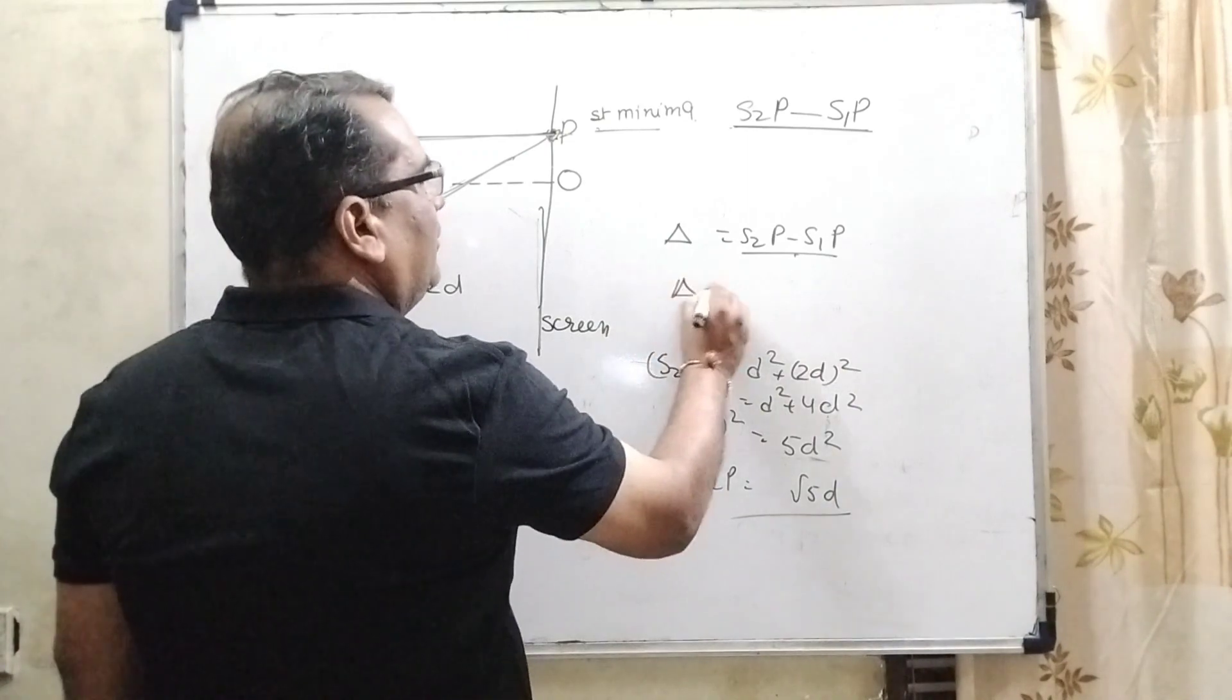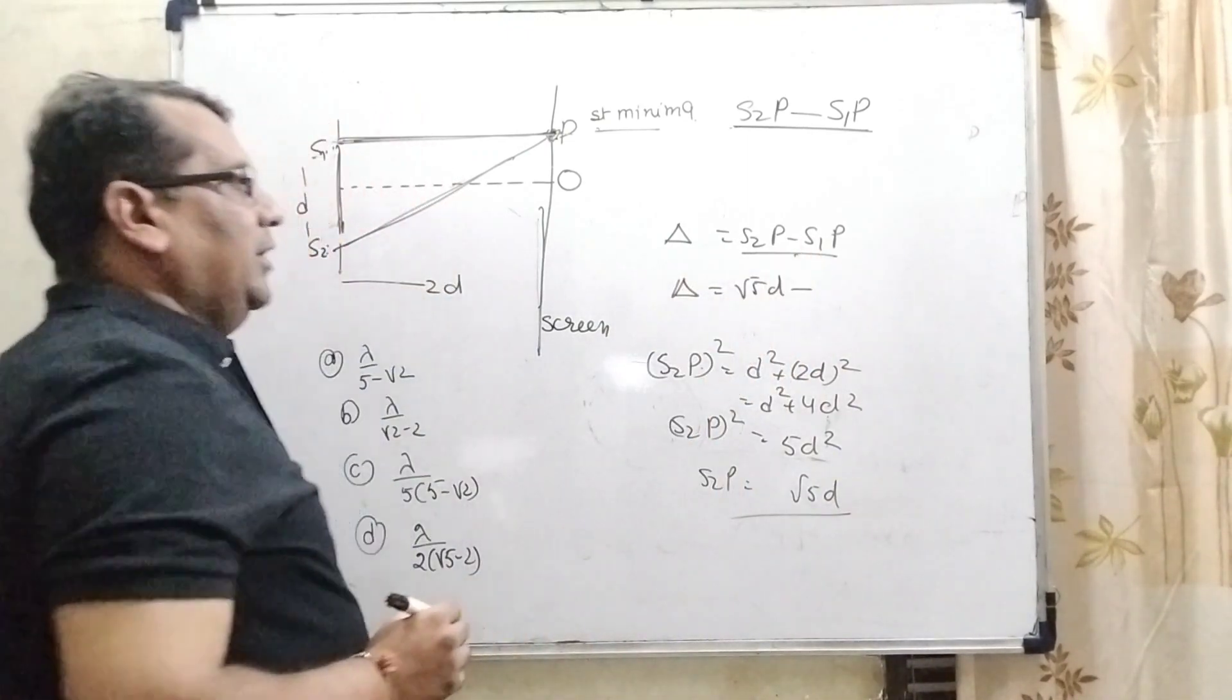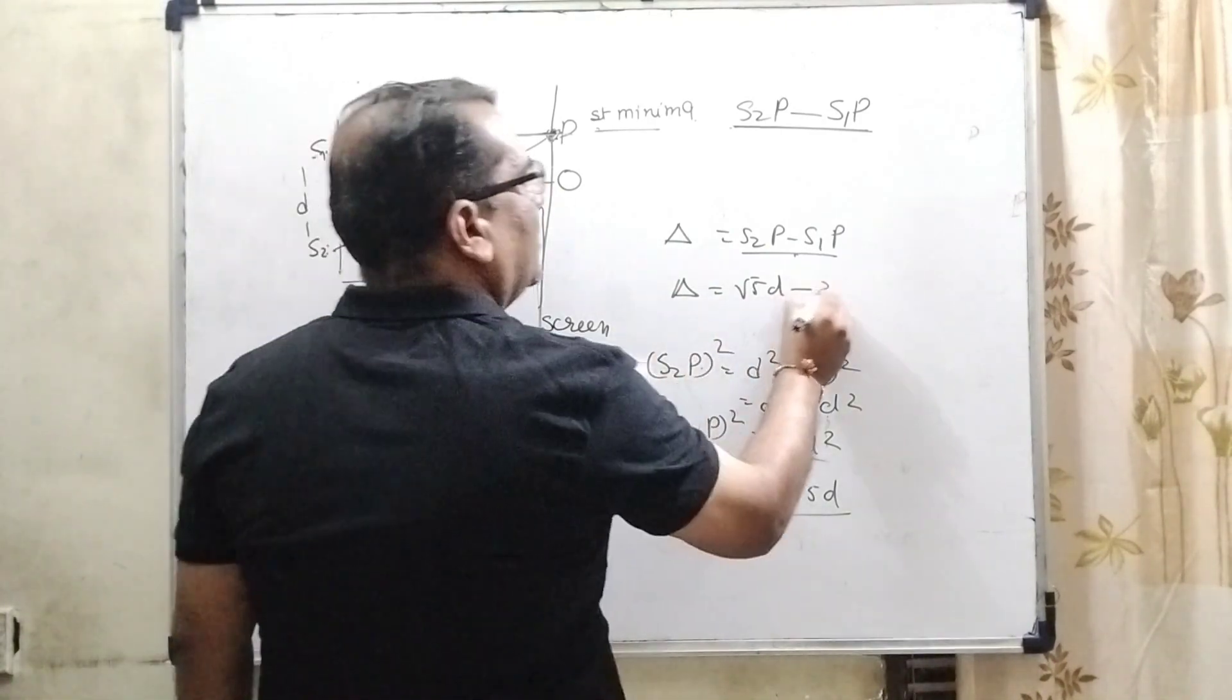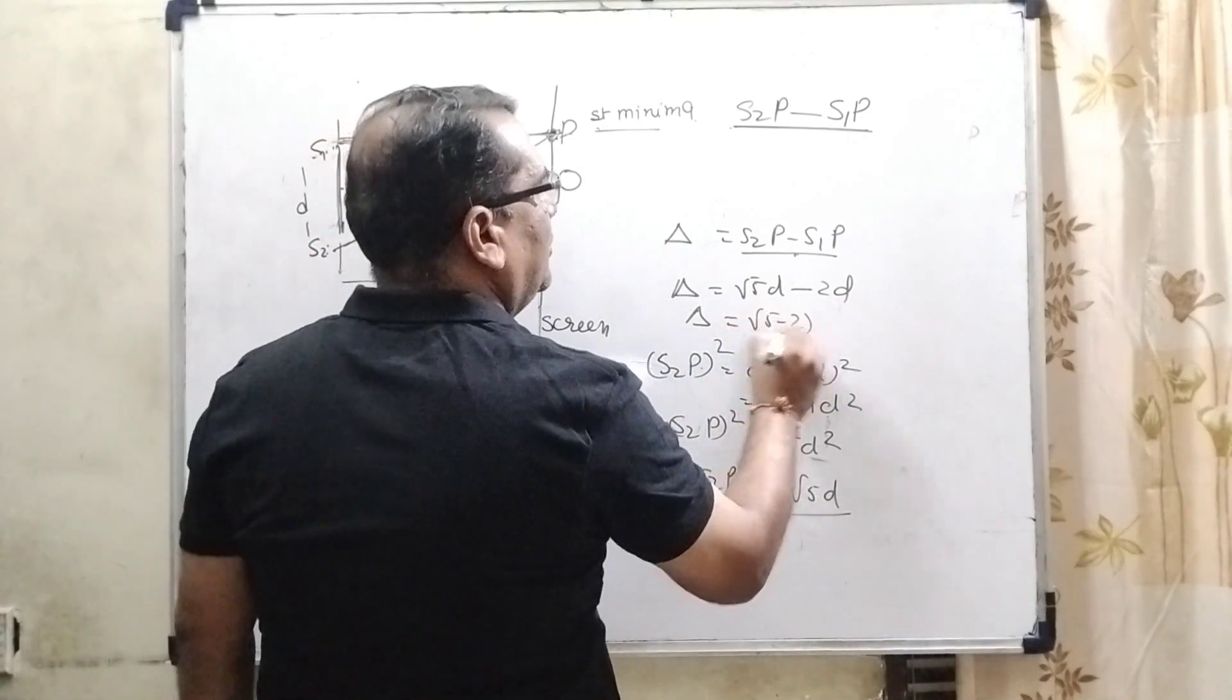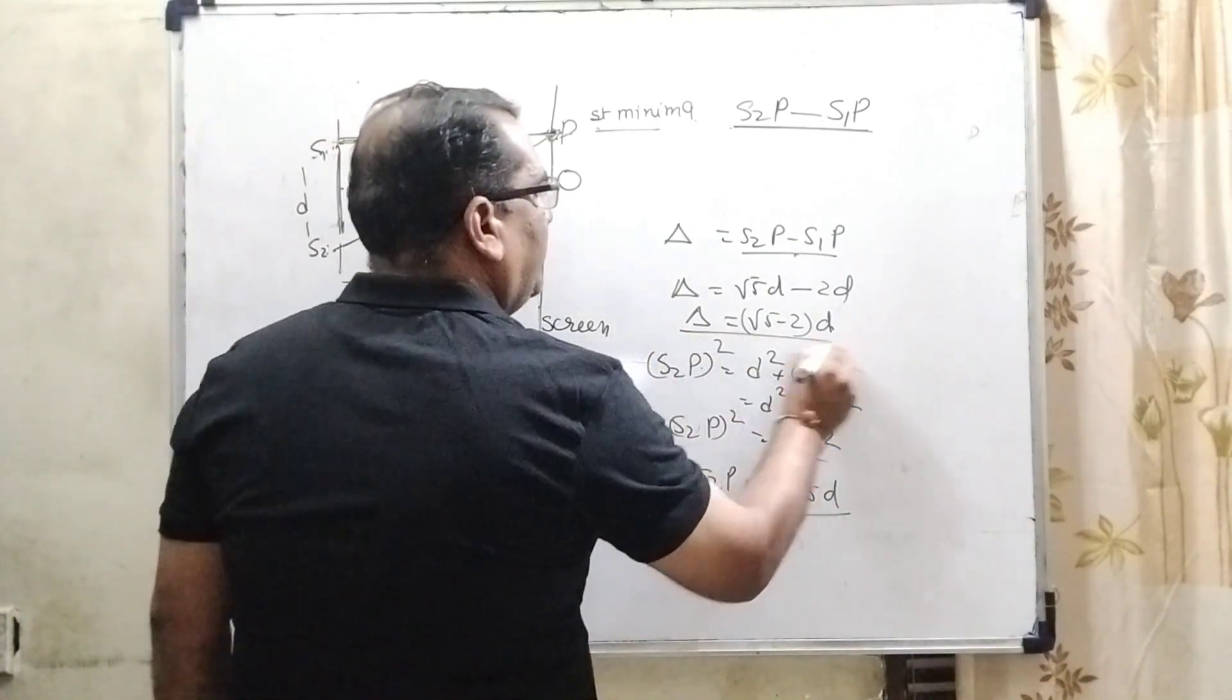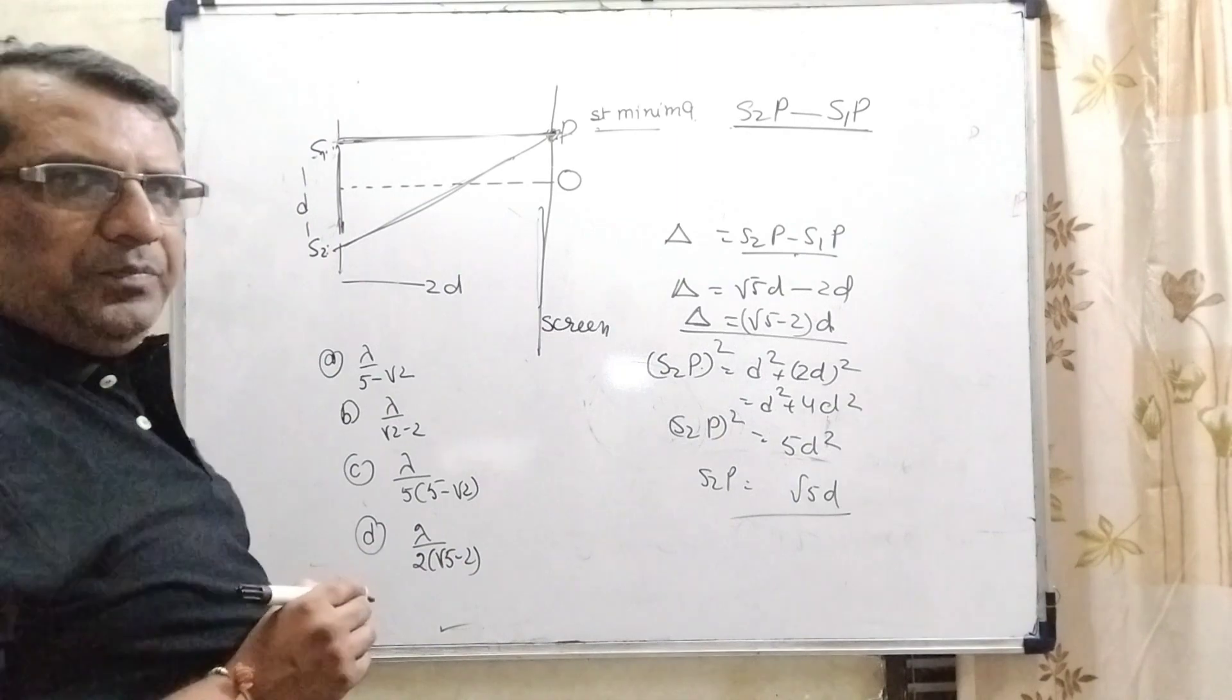So, here delta equals root 5d minus 2d. So, we get path difference as root 5d minus 2d.